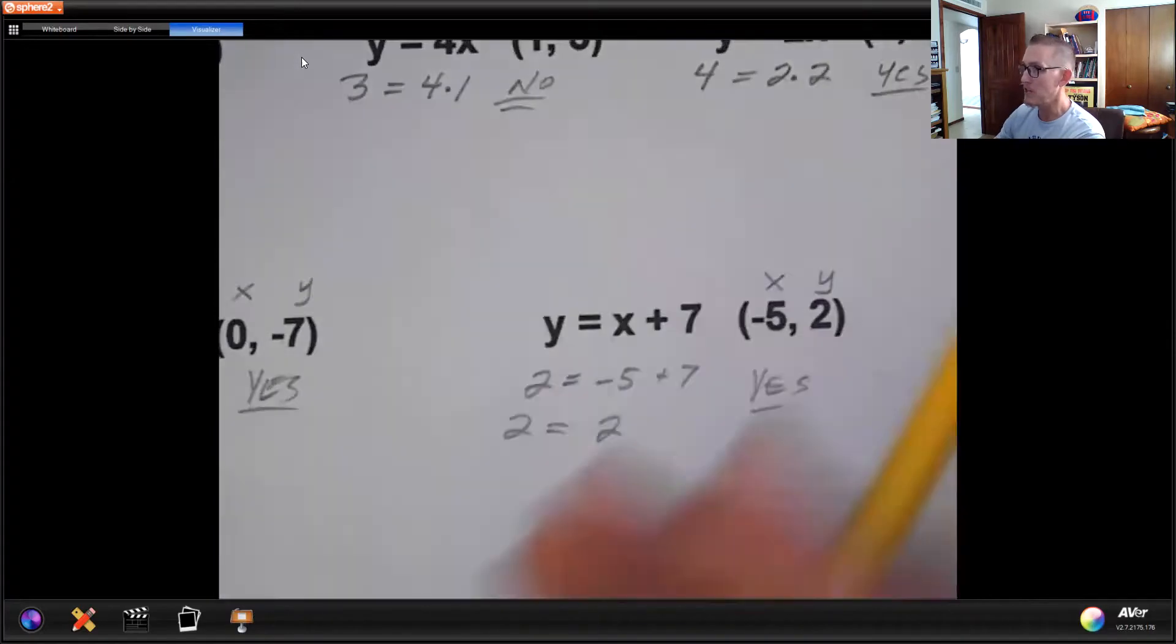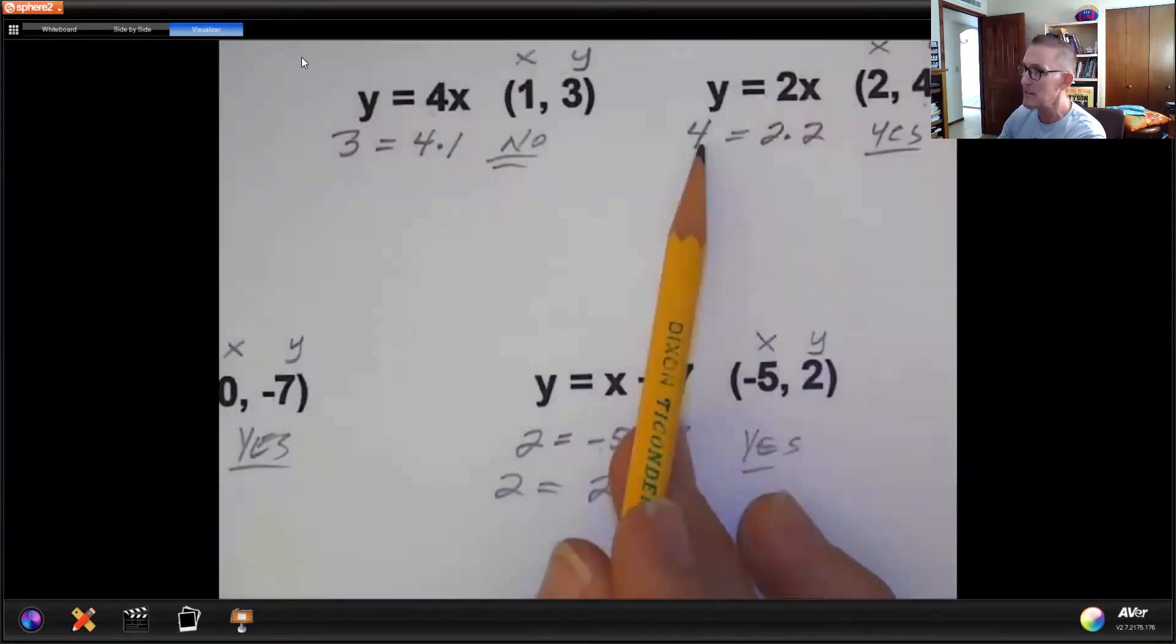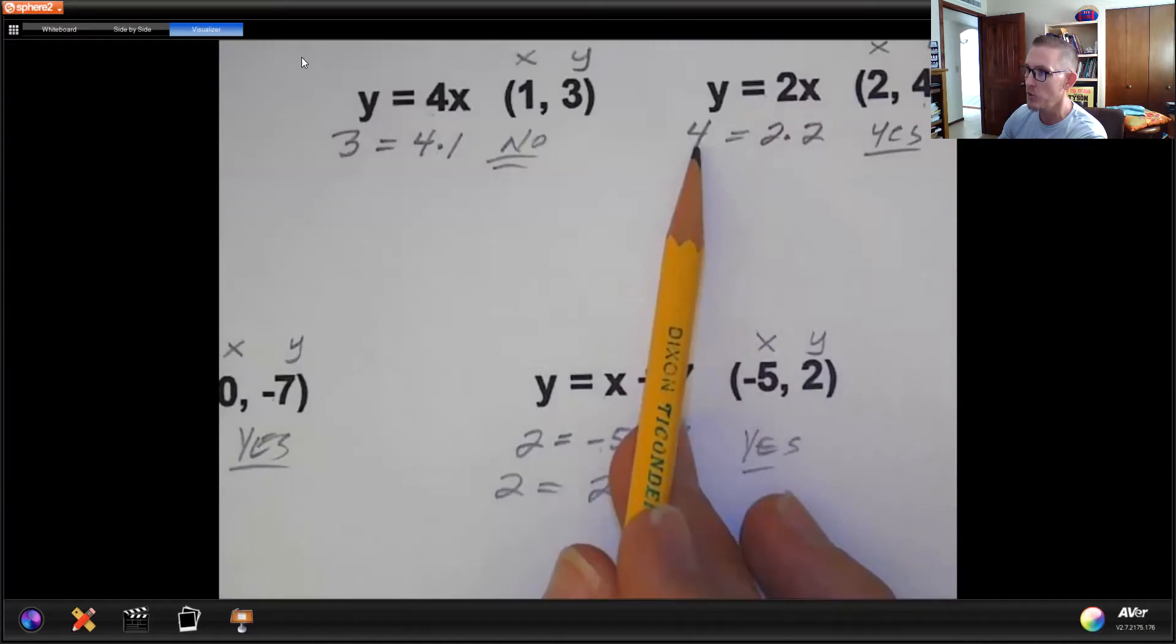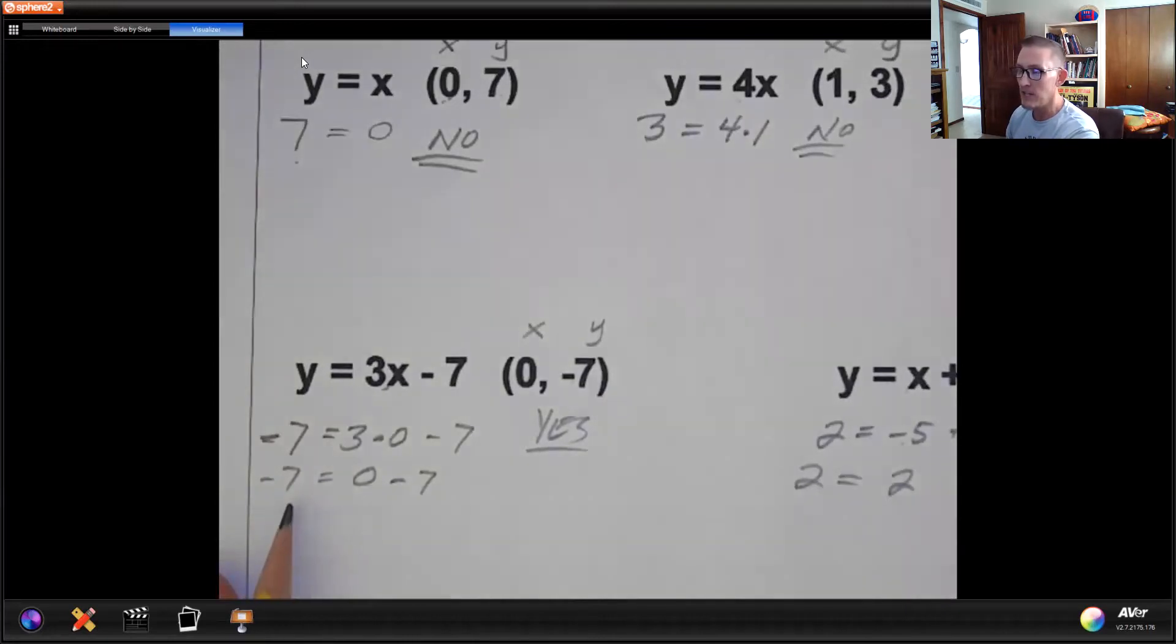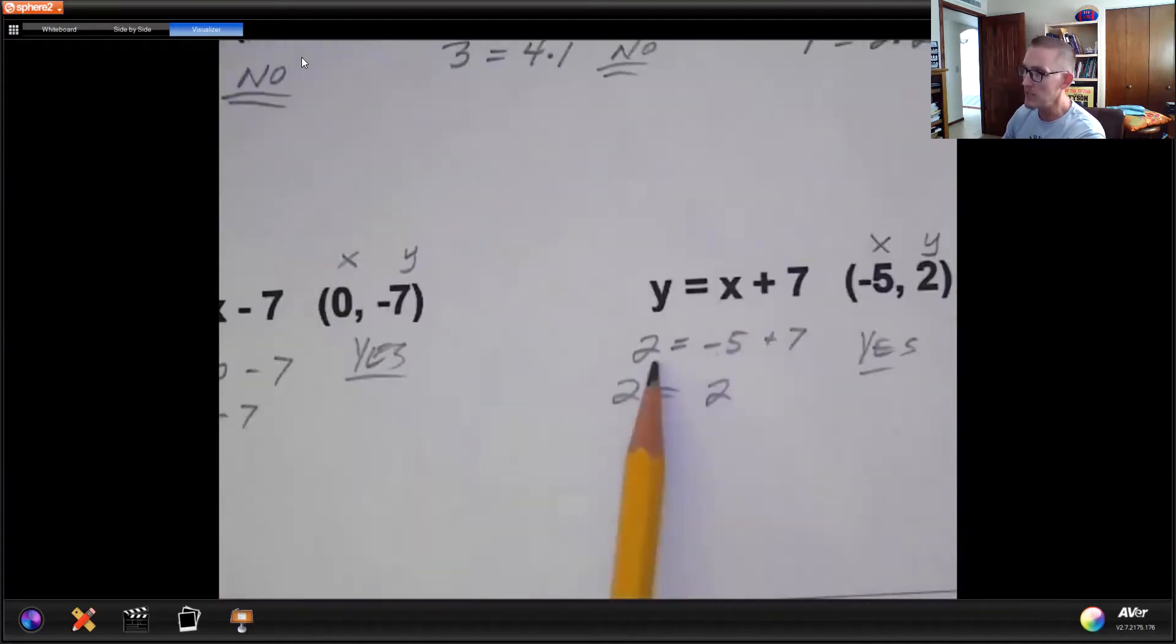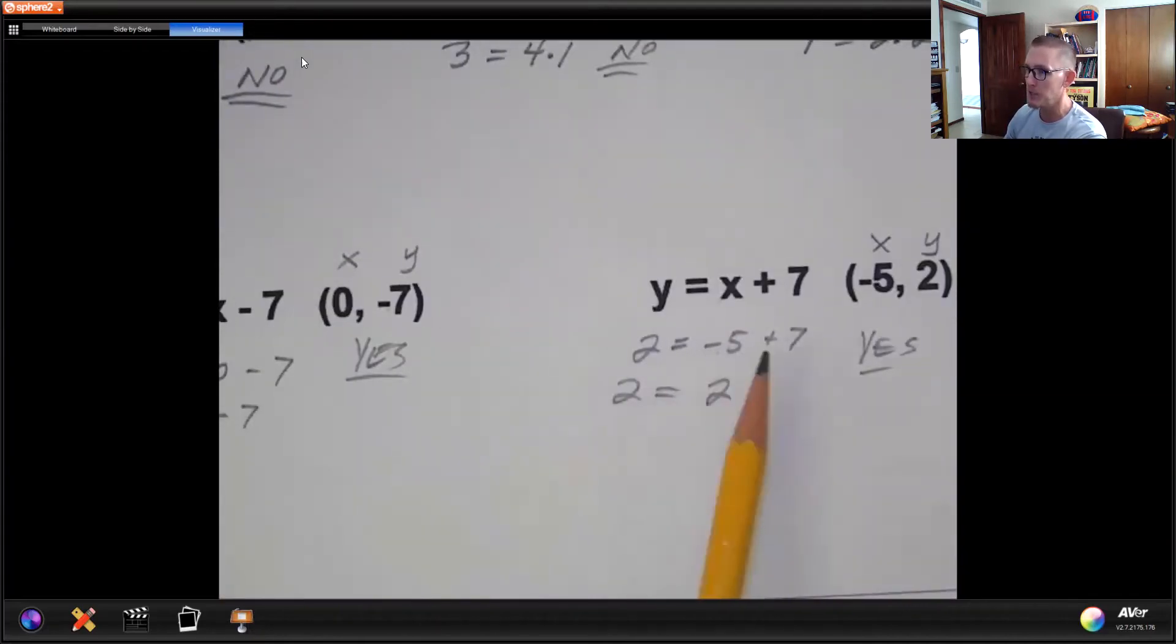But then I started getting yes because they gave me statements that did make sense and were true. 4 does equal 2 times 2. Negative 7 is equal to 0 minus 7.